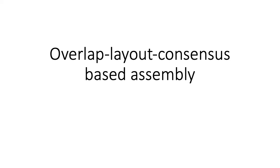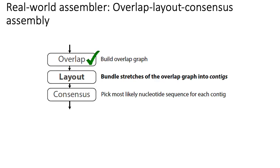I want to discuss what's known as overlap layout consensus based assembly strategies, which is basically a more modern approach to using overlap graphs to assemble contigs. In real life you wouldn't just use an overlap graph on its own, mainly because it's pretty messy and hard to interpret. Something a little bit closer to a real world assembler is what's called an overlap layout consensus assembly.